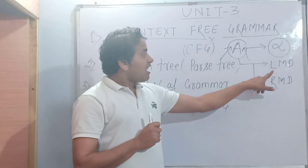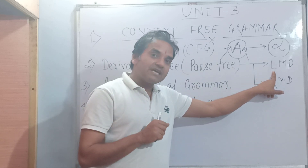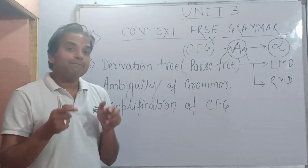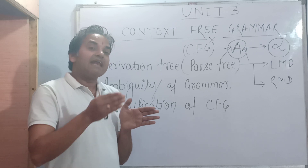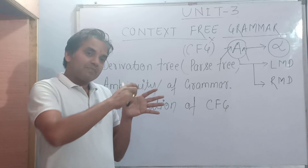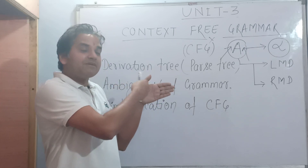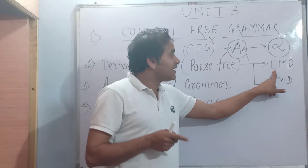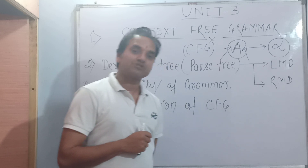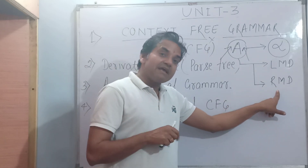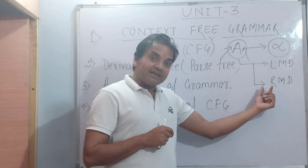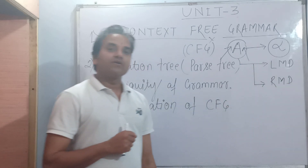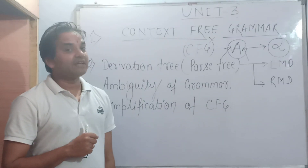A derivation tree is called a leftmost derivation tree if at every step we replace the symbol which appears leftmost in the string. So we are replacing the leftmost symbol, and the tree produced is called a leftmost derivation tree. If at every step we use the rightmost symbol, then that tree is called a rightmost derivation tree.